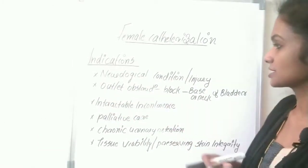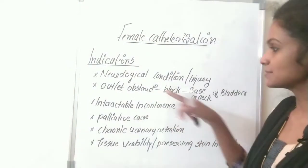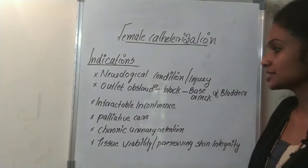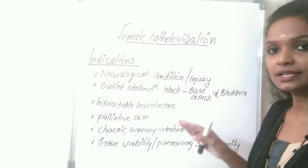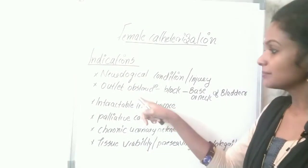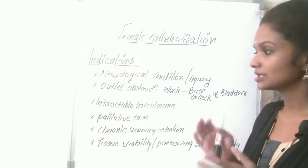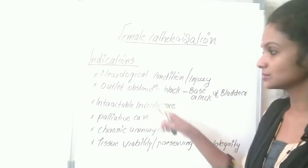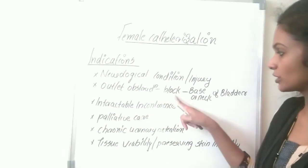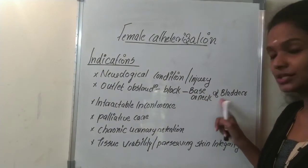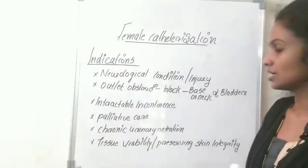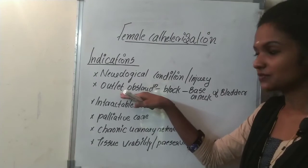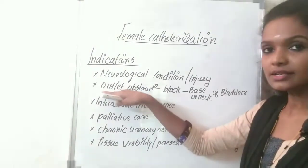The next indication is outlet obstruction — blockage occurring at the base or neck of the bladder. It is mainly seen in older men and may be due to enlargement of the prostate glands, stones in the bladder, or scar formation. This reduces the flow of urine to the urethra, so the patient cannot pass urine, and catheterization is applied.